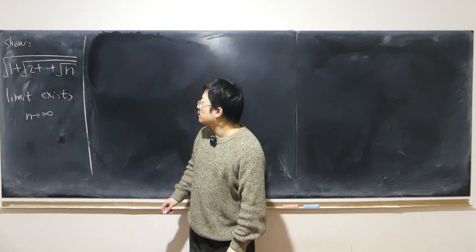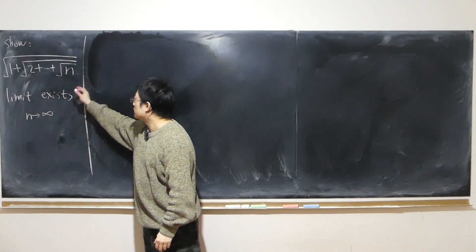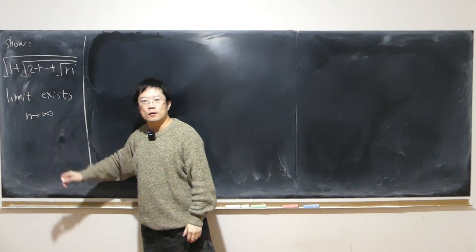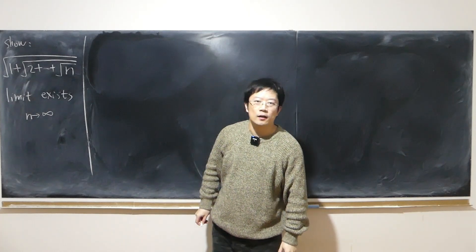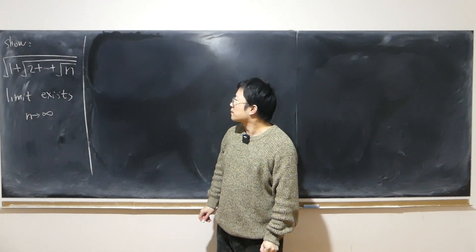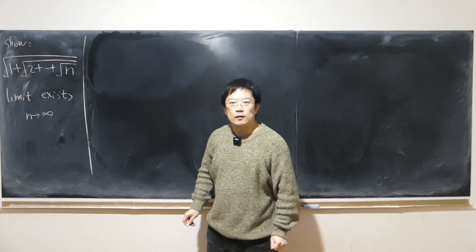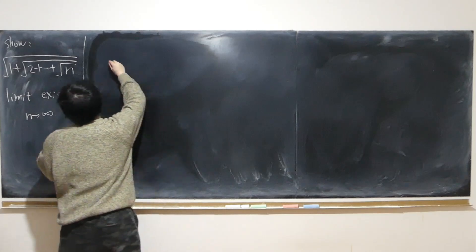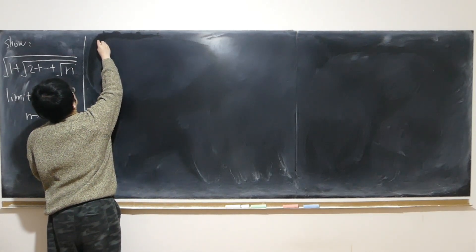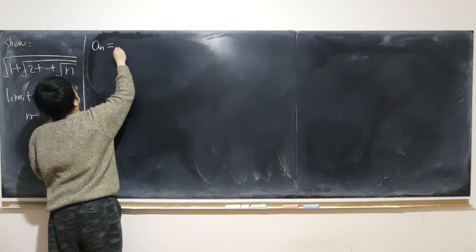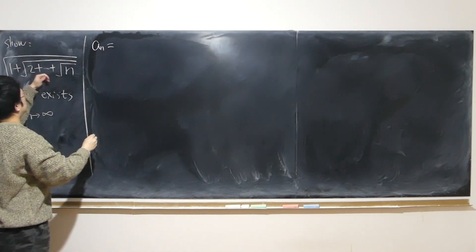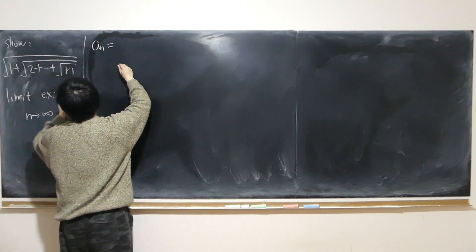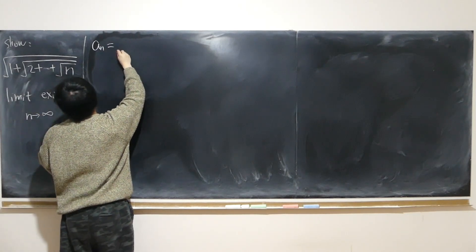How can we show that this limit exists as n approaches infinity without calculating its actual limit? It's easy to see that this sequence has to increase — definitely increasing.